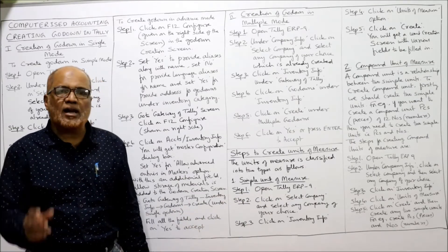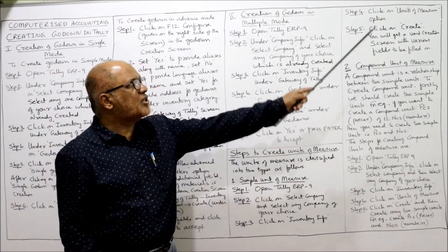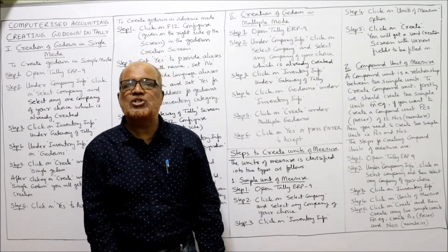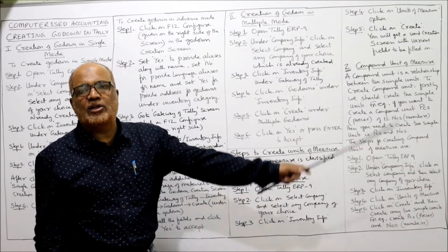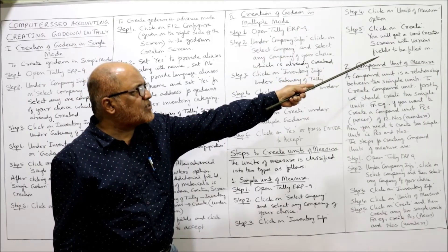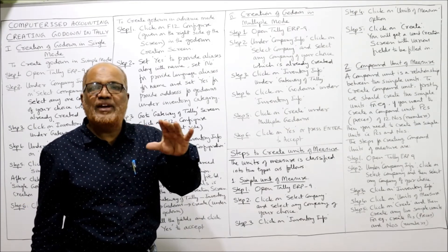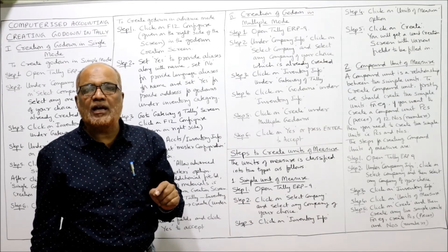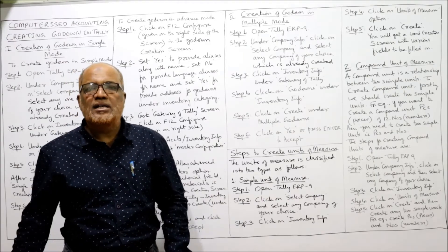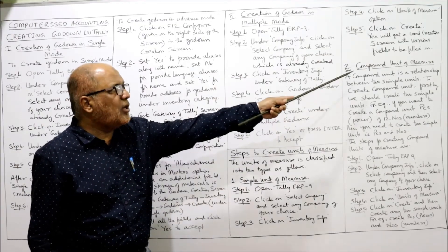Steps to create a simple unit of measure: Step 1: Open Tally ERP 9 as usual. Step 2: Click Select Company and select the company of your choice. Step 3: Click on Inventory Info. Step 4: Click on the Units of Measure option within Inventory Info. Step 5: Click on Create — you will get a Unit Creation screen with various fields to fill in. Fill up the fields to create the unit of measure.